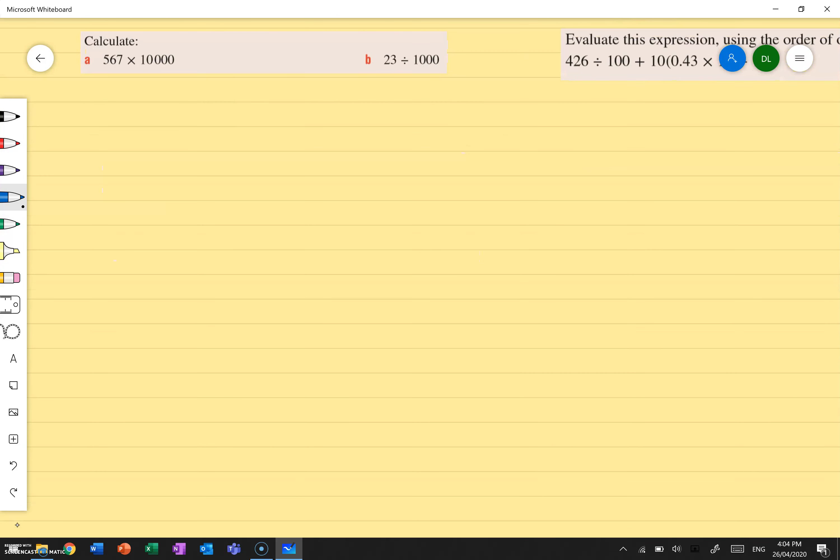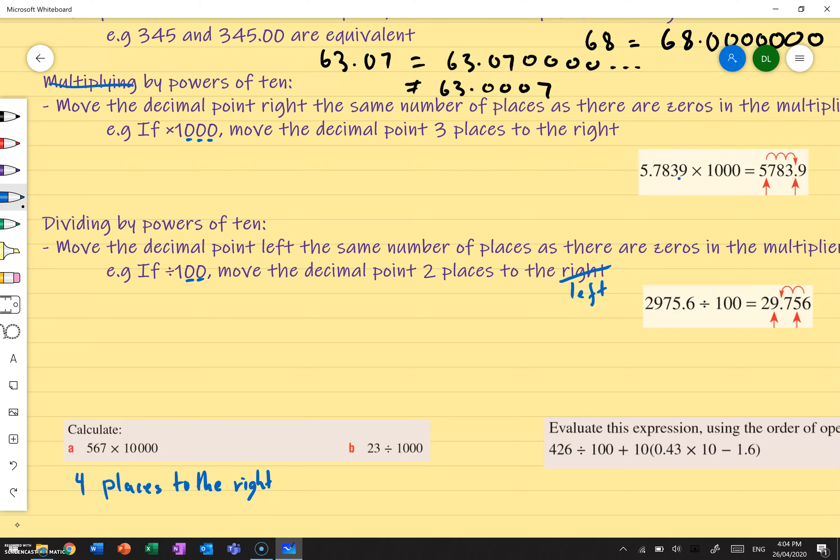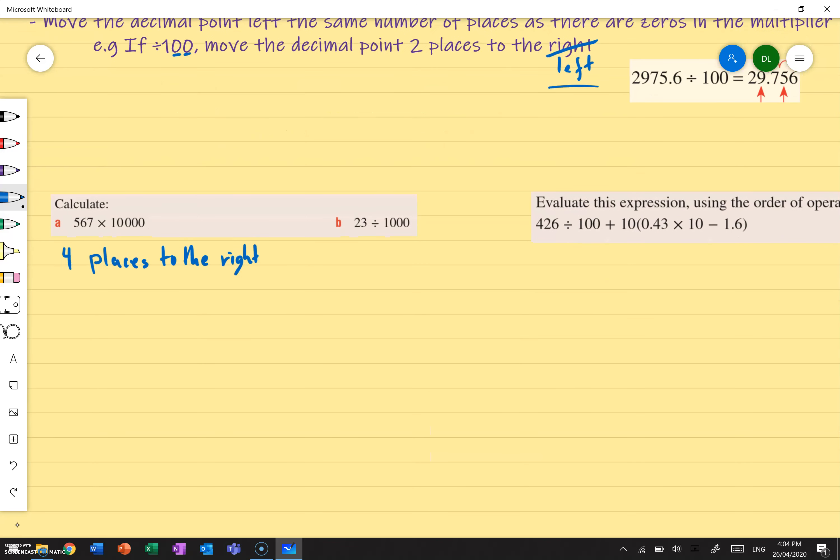So for this one over here on the left, calculate 567 times by 10,000. How many zeros are there in 10,000? One, two, three, four. There's four, which means we have to move it four places. Now, do we move it left or right? We move it to the right, because it's multiply. So multiply, as we said before, multiplying we move it right, dividing we move it left. So I'm just going to write over here, multiply is right, divide is left.